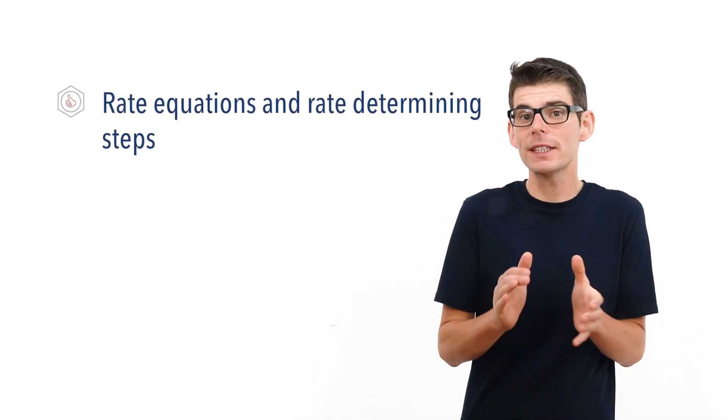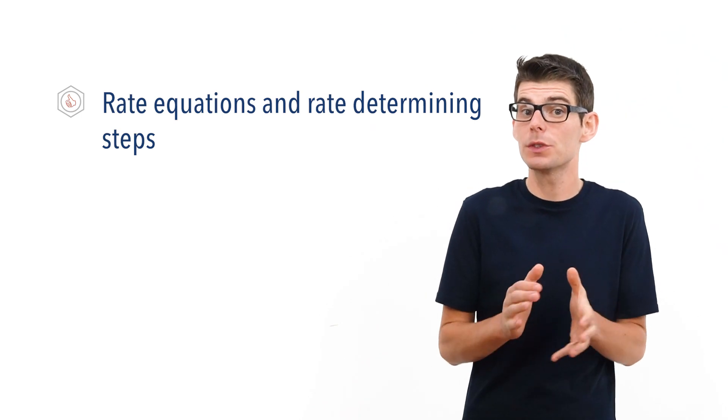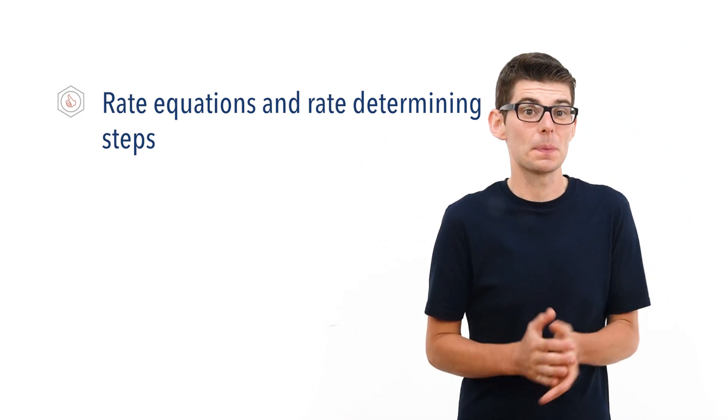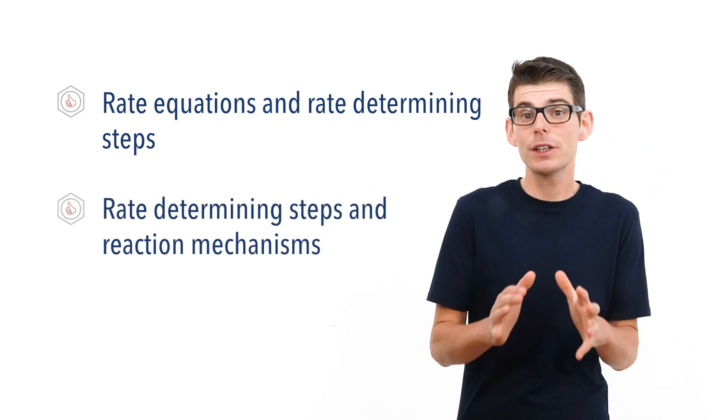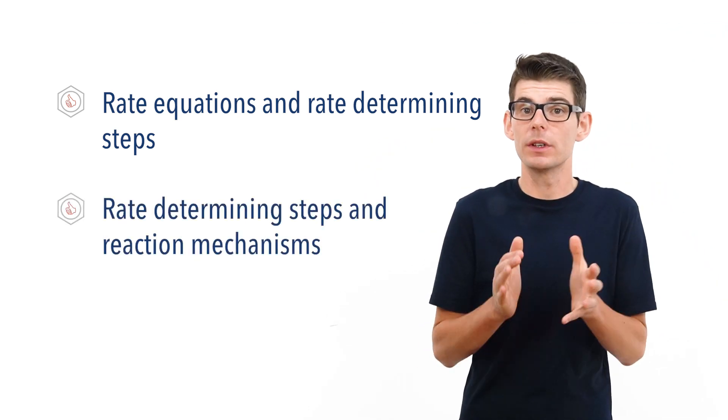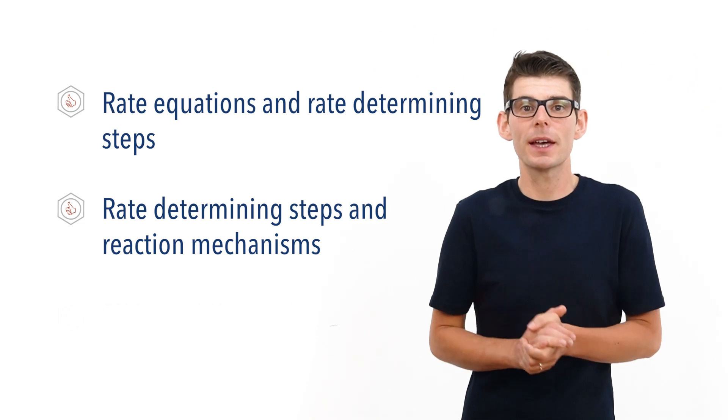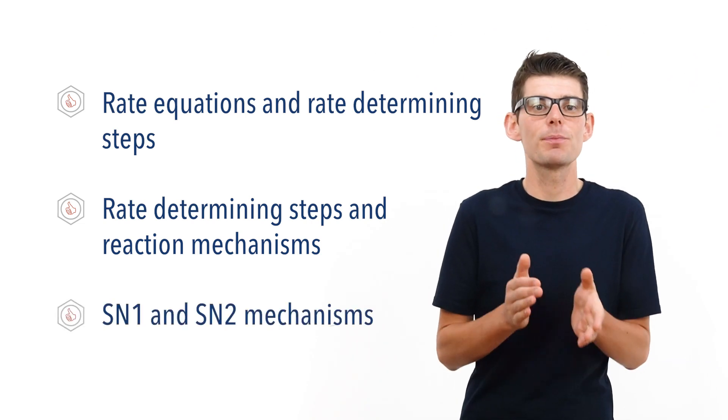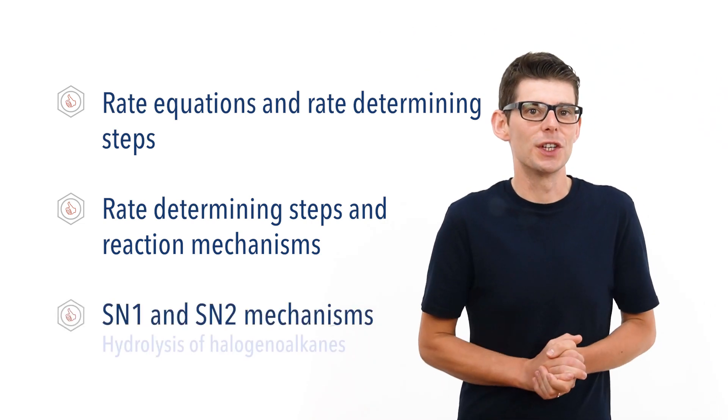Hello, Matt here from chemistrystudent.com. In this video we're going to look at rate determining steps and how rate equations can be used to predict reaction mechanisms. We're going to talk about the link between rate equations and rate determining steps, how rate determining steps can be used to predict the pathway a reaction follows — its mechanism — and show all of this in detail with examples of SN1 and SN2 mechanisms for the hydrolysis of primary and tertiary halogeanoalkanes.